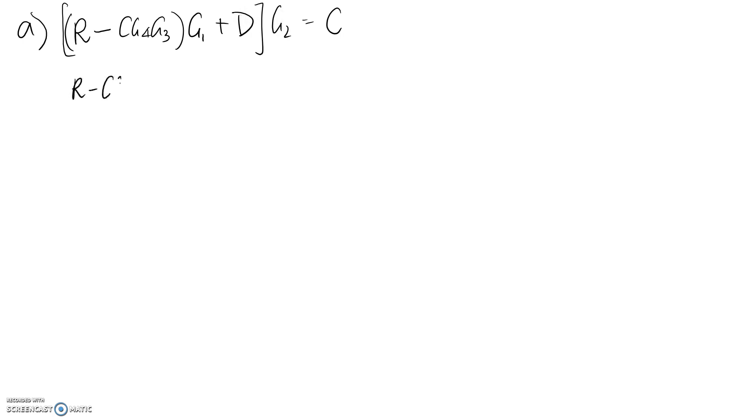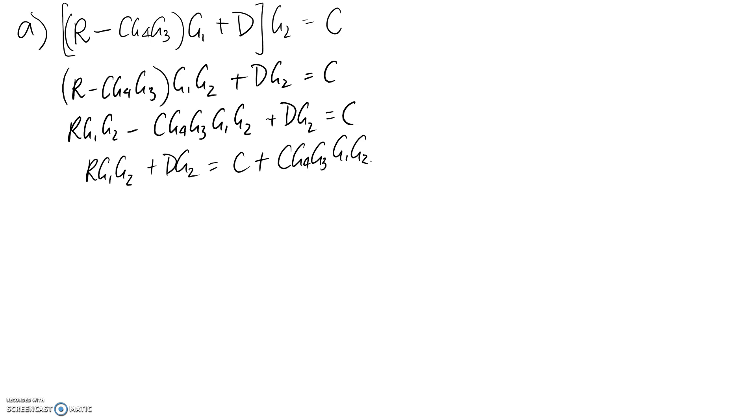I'm going to start by expanding out the bracket and putting this G2 in like so. Now I'm going to expand this one out inside the bracket as well. Now I want to put everything with C on one side of the equation, everything without on the other. I've achieved that. What I want to do is factorize C.